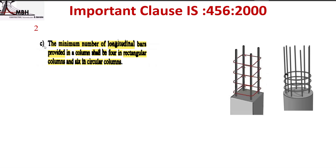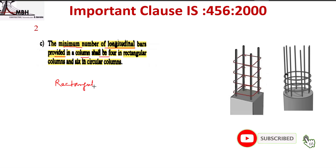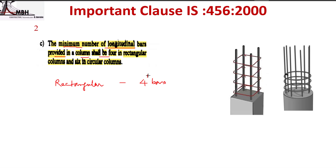The next clause states that the minimum number of longitudinal bars provided in a column shall be 4. In a rectangular column, you can provide a minimum of 4 bars, and in a circular column, the minimum is 6 bars.